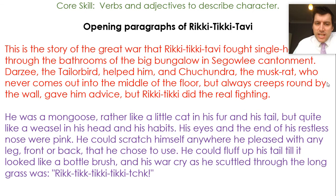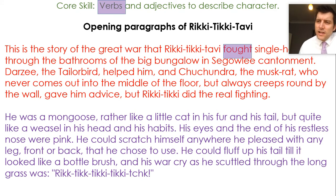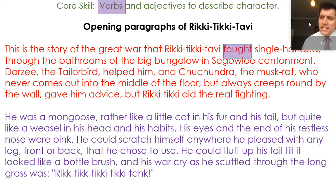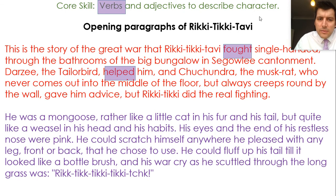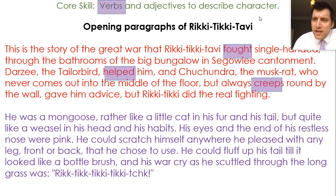Looking at these two sections from the beginning of Rikki-Tikki-Tavi again — we can see there are verbs and adjectives in it. The first verb I noticed was 'fought' — so Rikki-Tikki-Tavi fought, and the fact he's fighting shows it's a battle, not an easy situation. 'Helping' shows the tailor bird Darzi has a relationship of concern and care with Rikki-Tikki. Then 'creeping around' — Chuchundra creeping around shows he's maybe stealthy, clever, but also might be sneaky.